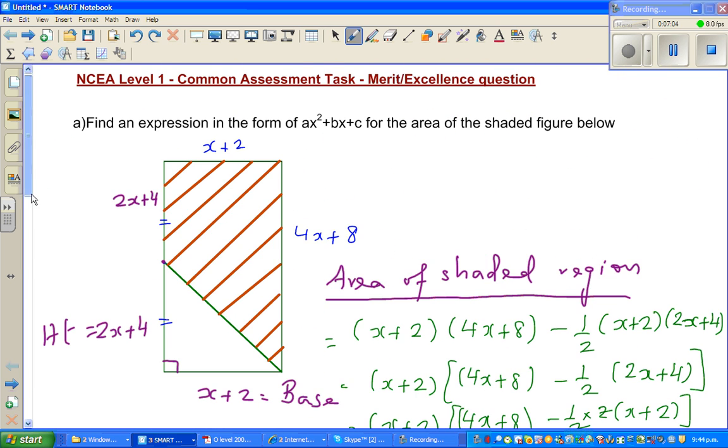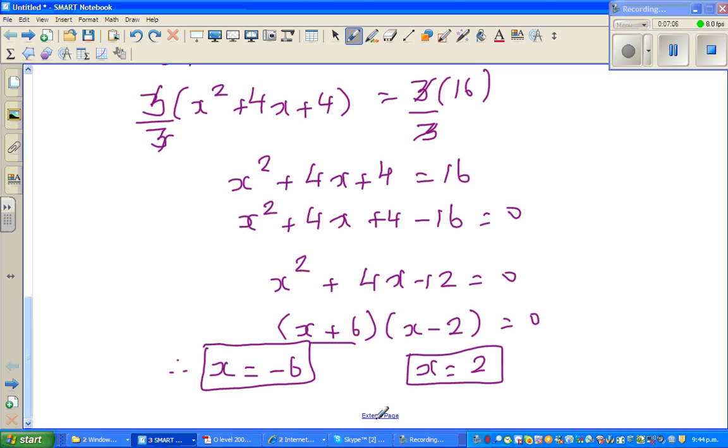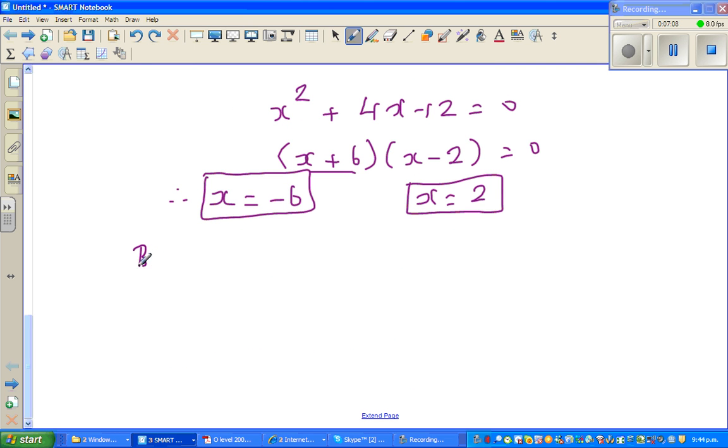So now you have to say, but x has to be greater than 0. Or we can also say like this: but x is not equal to -6. Therefore, x is equal to 2.